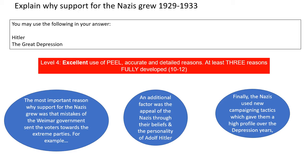Level four, which will give you access to grades eight and nine, requires a few things: you have to have excellent use of PEEL, you've got to have accurate and detailed reasons, and you have to provide at least three reasons fully developed. For simplicity, you need three PEEL paragraphs, each paragraph exploring a different reason for why support for the Nazis grew.